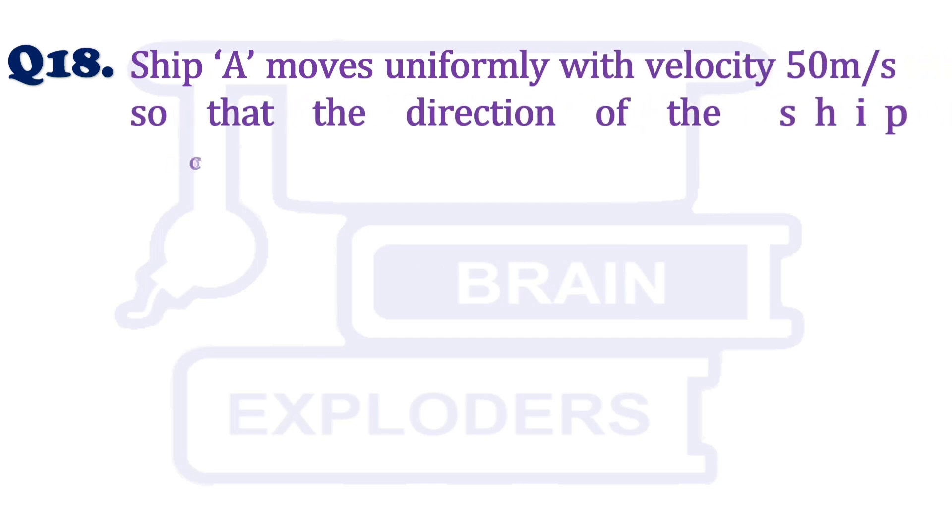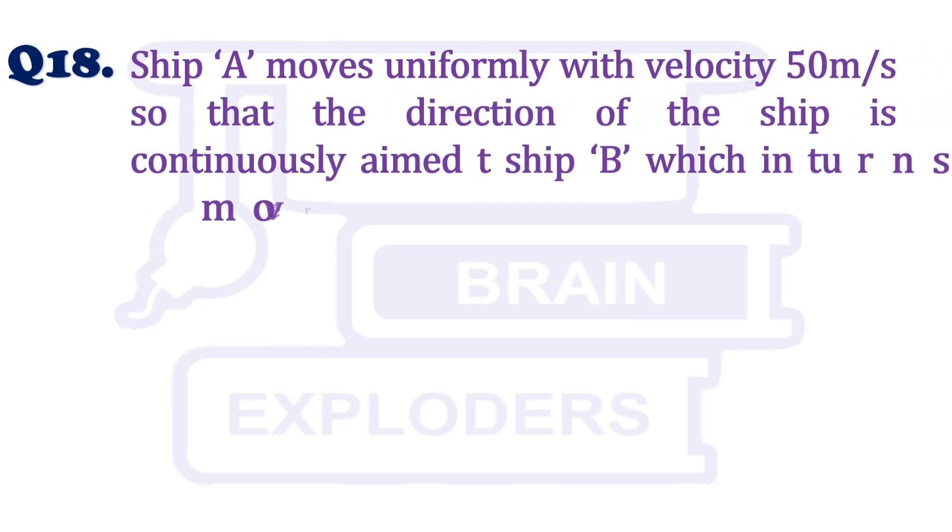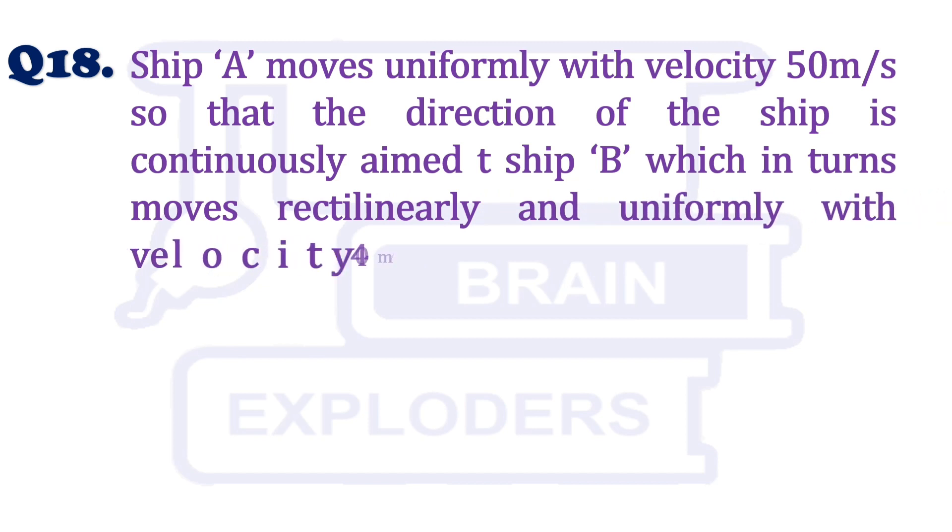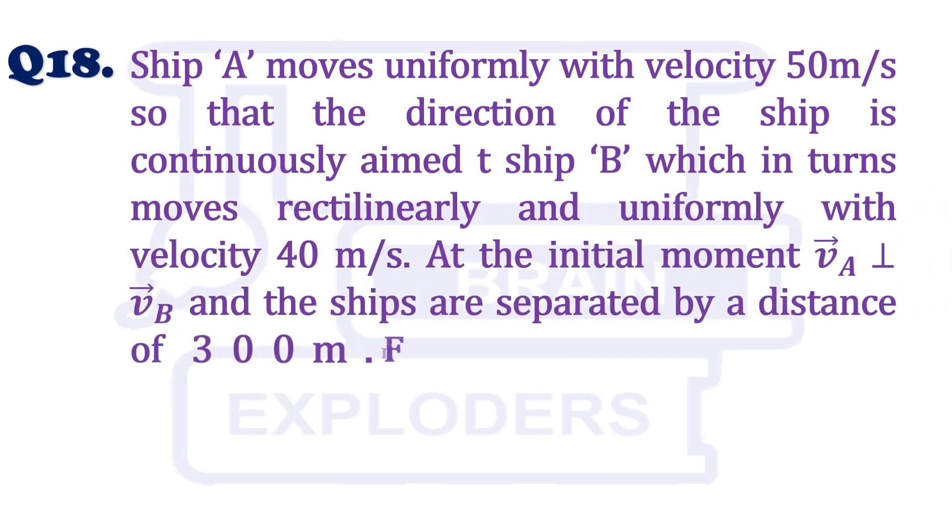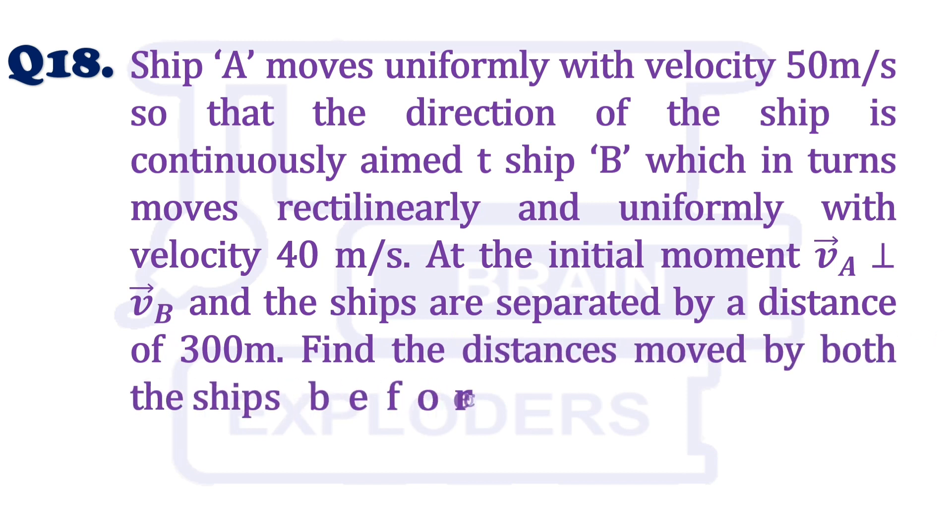Let's move to our another question. Ship A moves uniformly with the speed of 50 meter per second so that the direction of the ship is continuously aimed at ship B, which in turn moves rectilinearly and uniformly with velocity 40 meter per second. At the initial moment, Va vector is perpendicular to Vb vector and the ships are separated by a distance of 300 meters. Find the distance moved by both the ships before colliding.